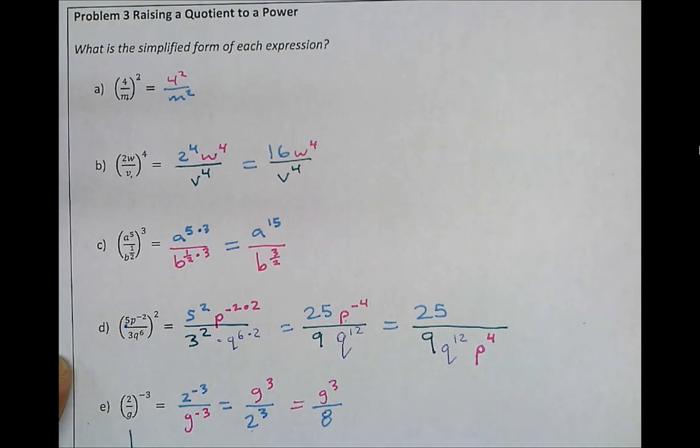So now if we simplify this, we get g to the power of 3 and that's over 2 to the power of 3. Which you'll notice simplifies out to the same answer we just got here. g to the power of 3 and this 2 to the power of 3 became the 8 in the denominator.